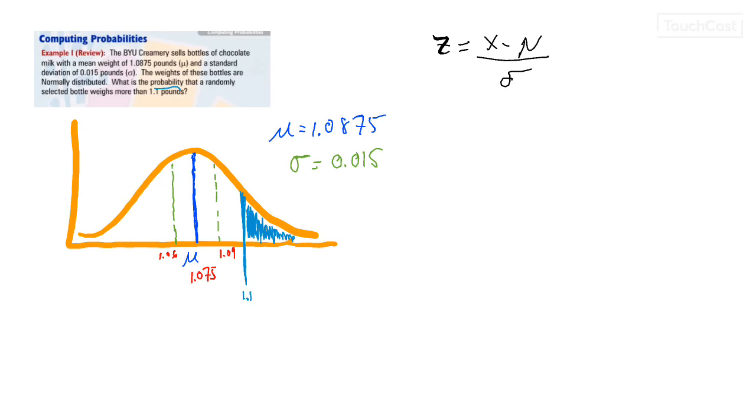So x minus mu, mu is the mean, sigma is the standard deviation. So we know both of those. So we know that x, the number we're looking for is 1.1. So 1.1 minus mu, which we know is 1.0875, divided by the standard deviation, which is 0.015. And this will give us our z-score.